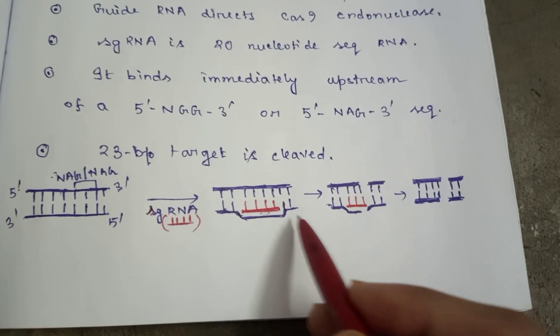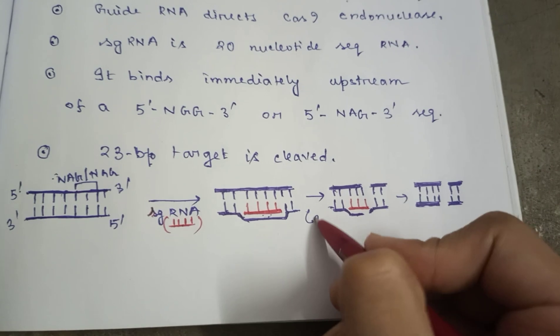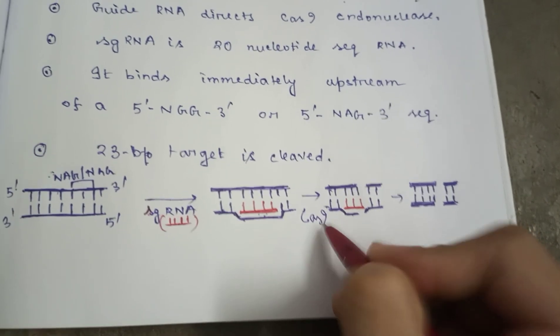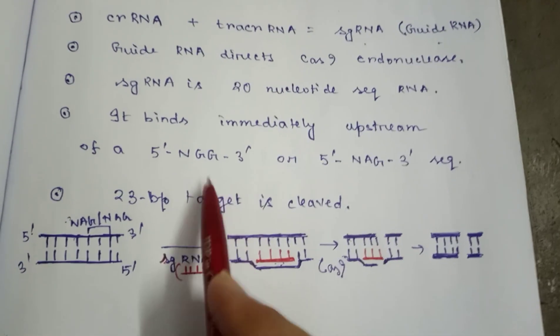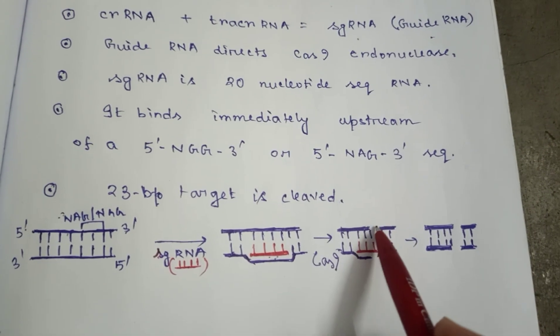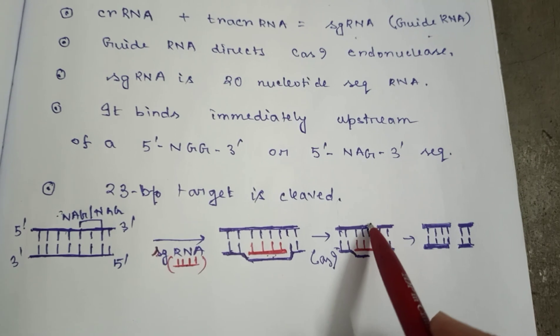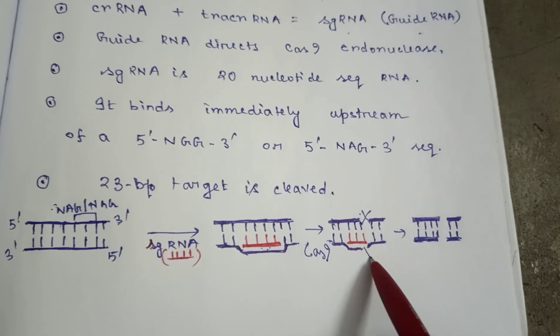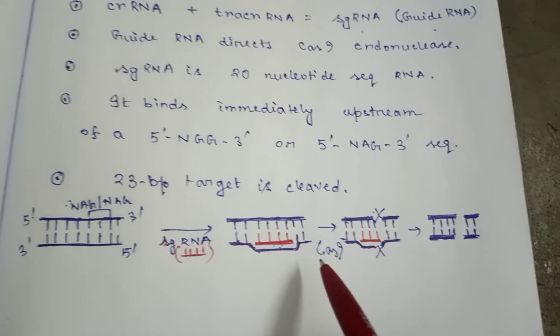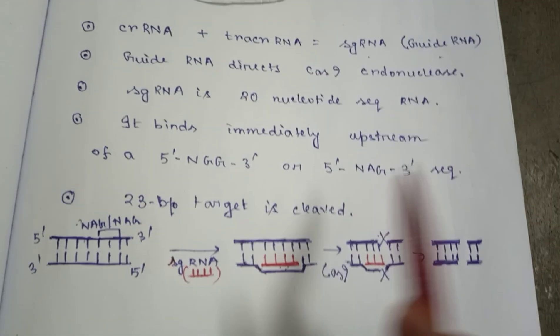The guide RNA will attach here. Now what is happening? You can see it will recruit Cas9, and Cas9 will cut at the position of the NAG or NGG as I have said. Here it will cut. Cas9 is recruited by guide RNA.